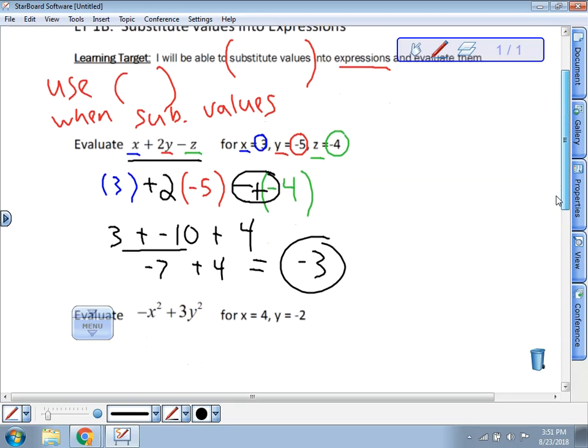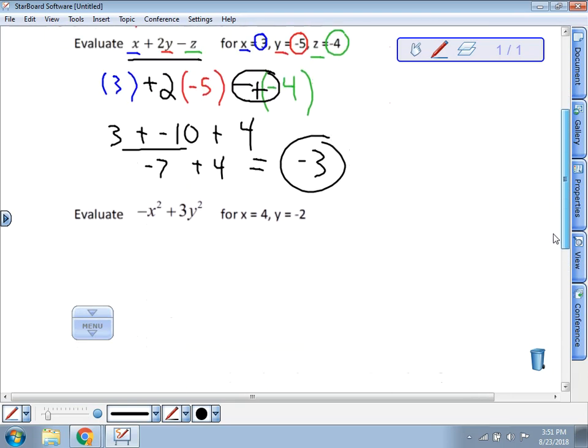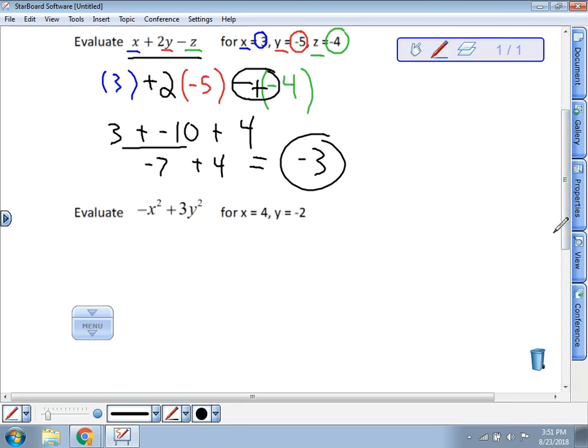Let's take a look at one more here so we can see what happens when we get those exponents and why those parentheses are so important. So here's our expression right here. It says x equals 4, so where I see an x, I'm going to put in 4. And where I see a y, I'm going to put in a negative 2.